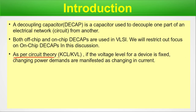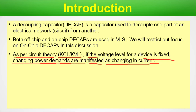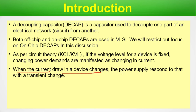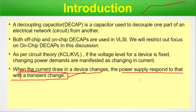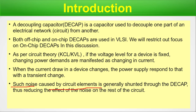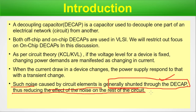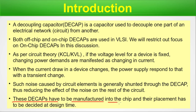As per circuit theory, including KCL and KVL — Kirchhoff's laws — if the voltage level of a device is fixed, the changing power demands are manifested as changes in the current. This is true for a single element and also for a sea of elements connected in a VLSI circuit. When the current draw changes, the power supply responds with a transient response. Such noise caused by circuit elements is generally shunted to the DCAP, which acts as a shunt, reducing the effect of the noise on the rest of the circuit.